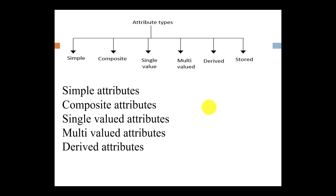So to summarize: an attribute represents the characteristics of an entity. Attributes can be of types: simple, composite, single value, multi-value, and derived. This is all about attributes and attribute types. In the next video, we are going to discuss what is a relationship, what is an entity-relationship diagram, the role of attributes in ER diagrams, degree, and the cardinality of each entity.